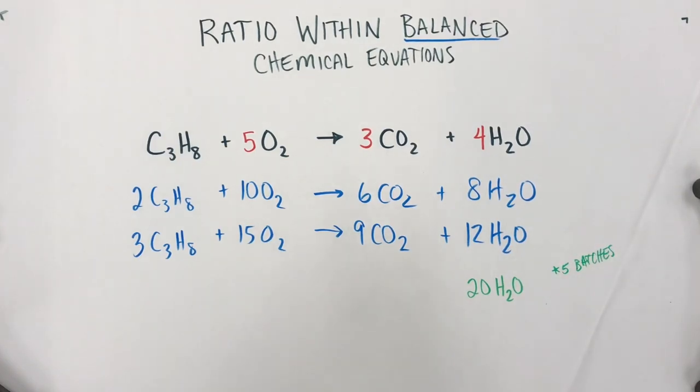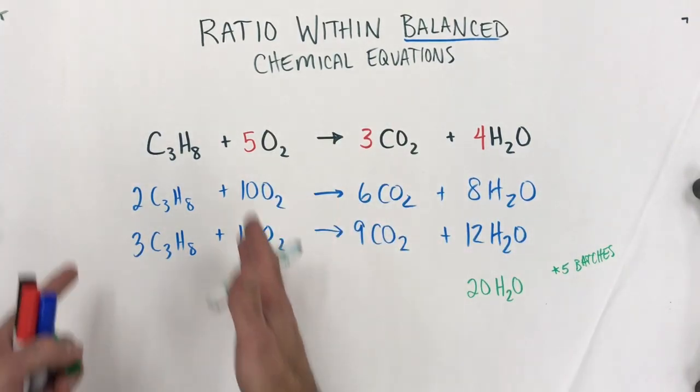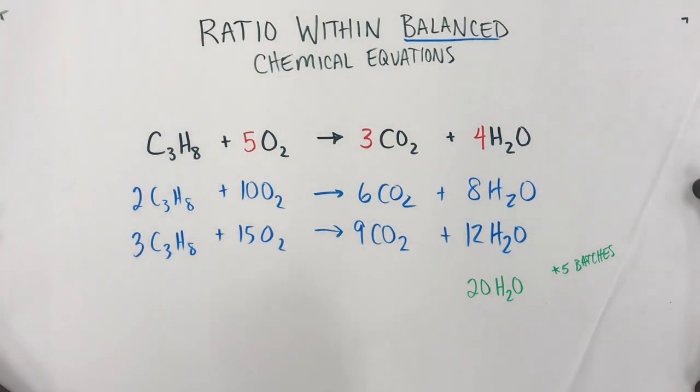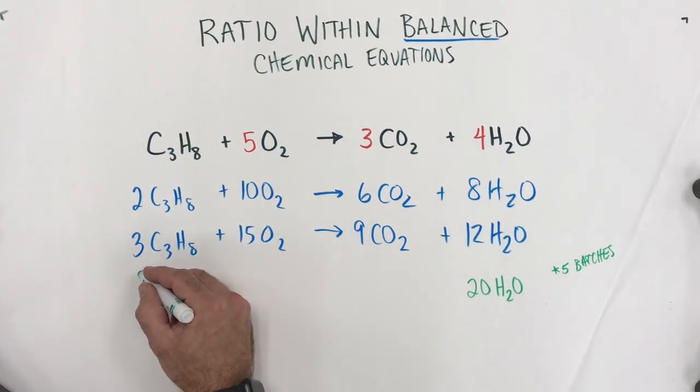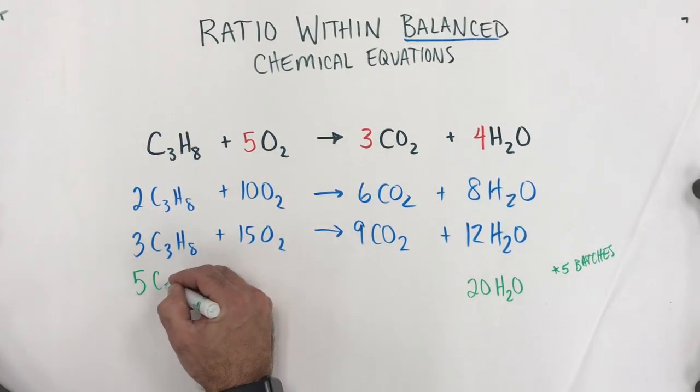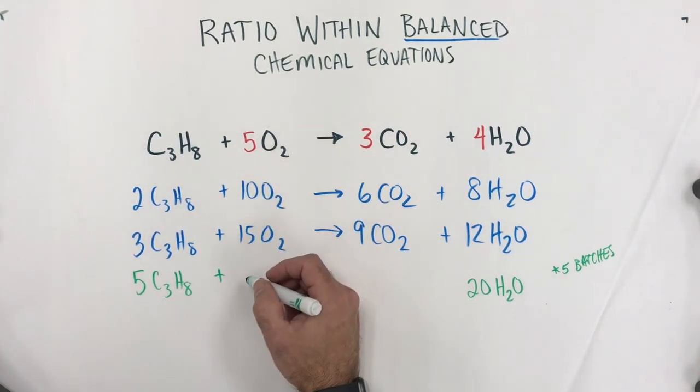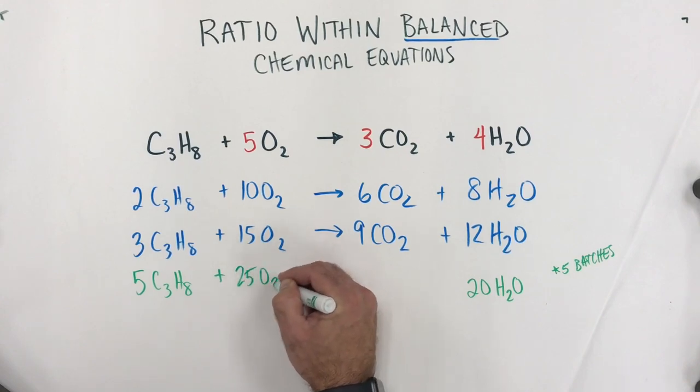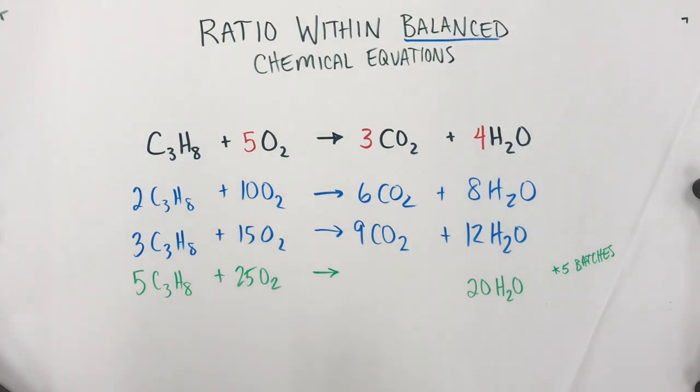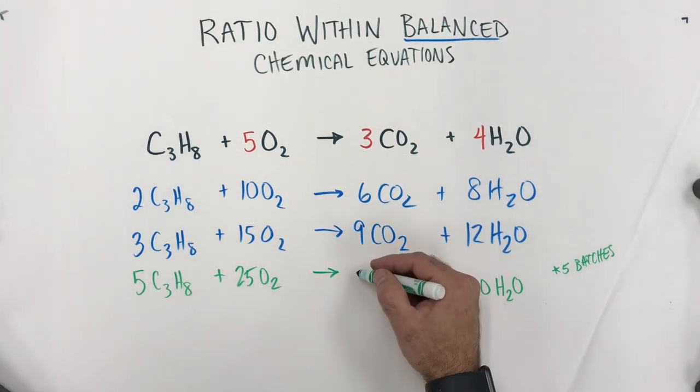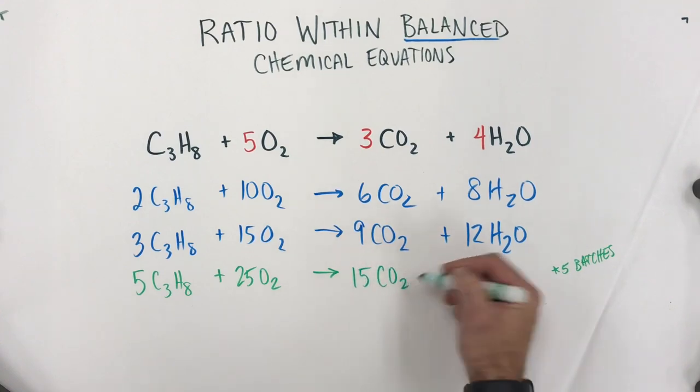So, if I'm going to do five batches worth of water, then I'm going to need five batches worth of ingredients. So, the recipe says one propane, five batches then would be five propane. The recipe says five oxygen, five batches would be 25 oxygen. If I have that much, I'm going to also make five batches worth of carbon dioxide. So, that's going to make me 15 carbon dioxide.